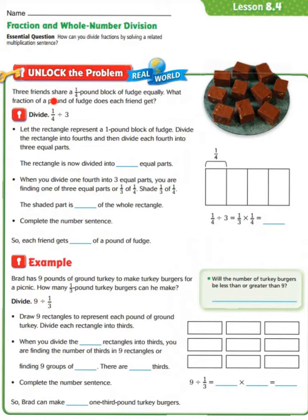It says three friends share a 1/4 pound block of fudge equally. What fraction of a pound of fudge does each friend get? Let's pull out our division equation from that: 1/4 divided by 3. We get that because it's a 1/4 pound block of fudge and there are three friends.